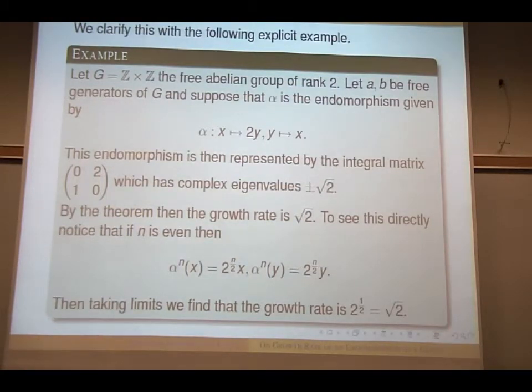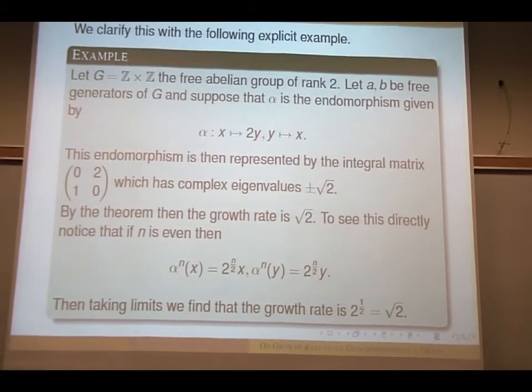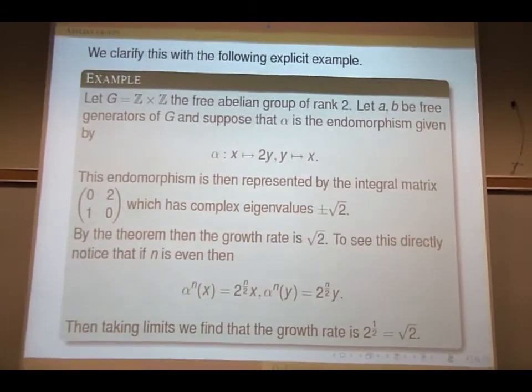The endomorphism is then represented by this integral matrix. You could also look at the transpose the same. If you find the eigenvalues is basically positive negative square root of 2. And by the theorem that we just had, the maximum absolute values of these eigenvalues, this growth rate is square root of 2.